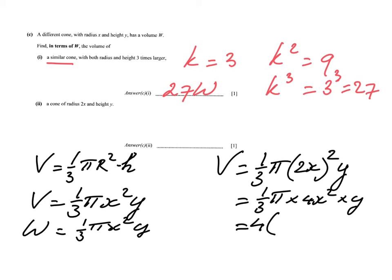So if I take that 4 out and rewrite it, 1 over 3 pi times x squared times y. Then I notice that inside the brackets is w. You see that? Inside the brackets here, for the new cone, is the same as w. But I have inside the brackets, times 4. So my answer is going to be 4 times w. It's going to be 4 times as big.